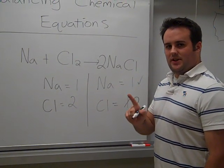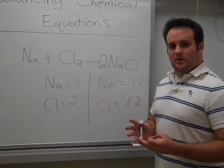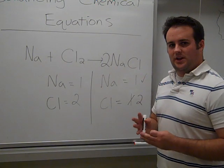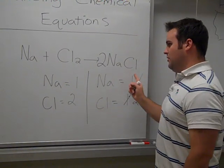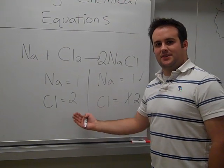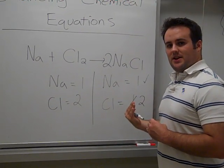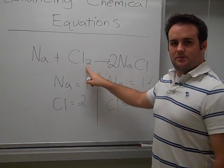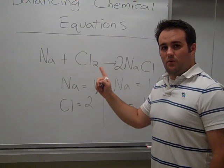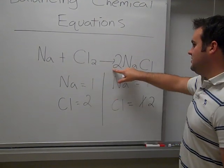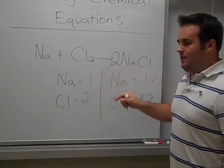One important tip: you cannot add coefficients in the middle of a chemical equation. This will change the overall formula. We just want to alter the number of molecules on each side so that the amount of molecules of what we started off with and what we end up with is the same. We also cannot change subscripts - this will change the identity of the chemical formula. Coefficients, or these numbers right here, are the only ones that we want to alter.